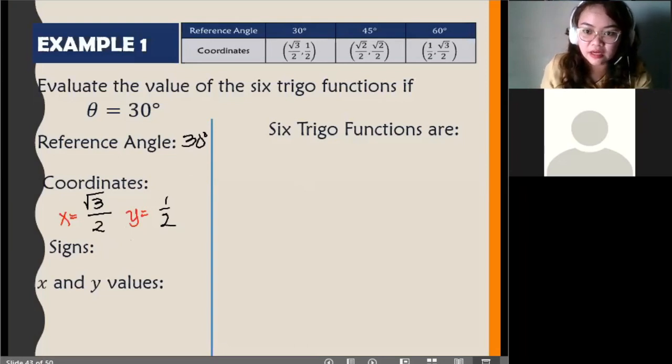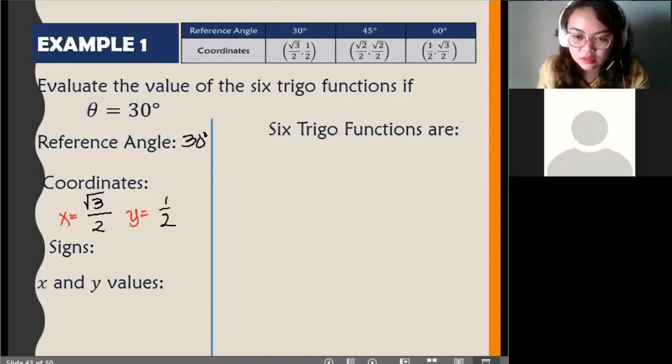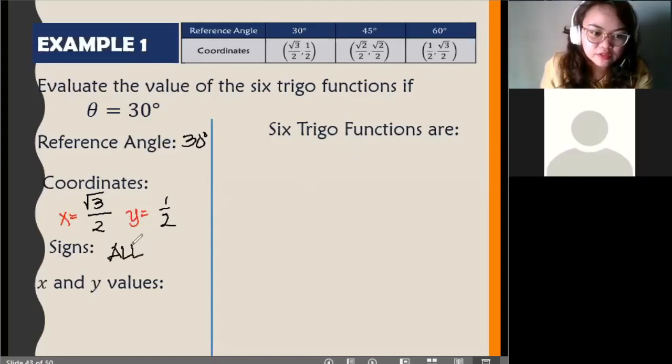Signs. This is in quadrant 1, di ba? What will be the signs for this? Ethan. Quadrant 1 siya. So, anong signs natin? Okay, all. So, that means all are positive. Very good.